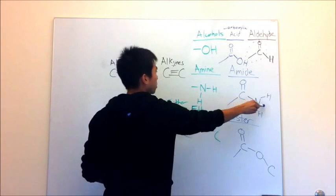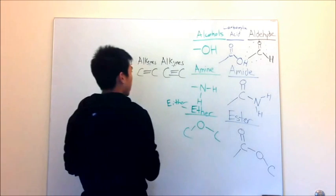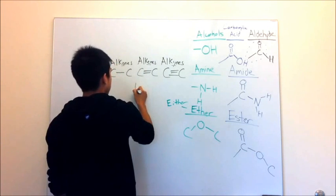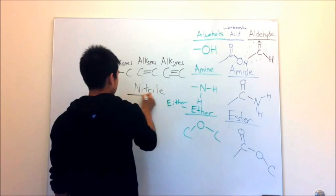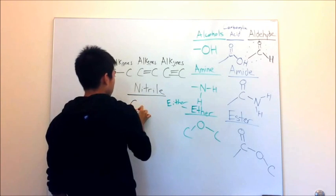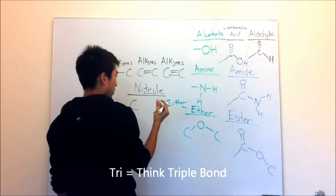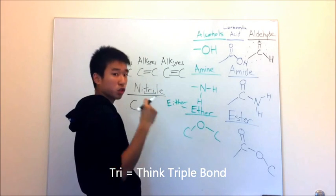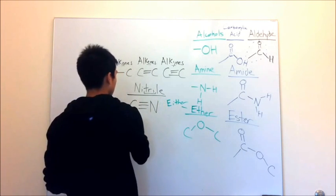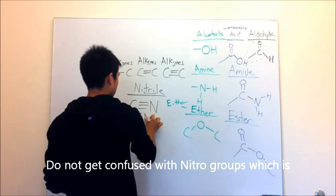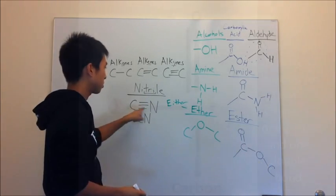We went over two functional groups with nitrogen before. Now I'm going to go over the third one with nitrogen, and that's going to be nitrile. Nitrile is just a carbon — and you can look at the name and see 'tri' in it, so I immediately think of triple bond. So it's carbon triple bonded to nitrogen. Sometimes it's just written as CN, but the moment you see CN, just know immediately it's going to be a carbon triple bonded to nitrogen.